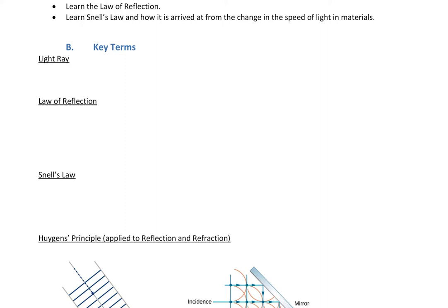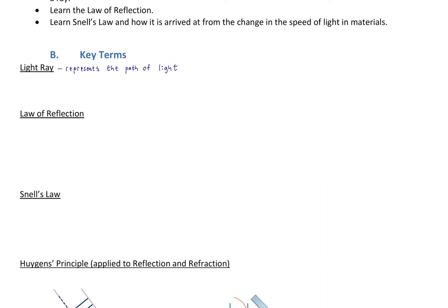Let's get into the light ray as our first key term. It represents the path of light — it just shows where light is pointing. If we consider something like a candle, there are rays emanating from that candle in all directions — an infinite number of them. If we consider something like a laser, we can approximate that laser as a single ray because it's more unidirectional. Perpendicular to the rays are the actual wave fronts, but the direction is represented by a ray.